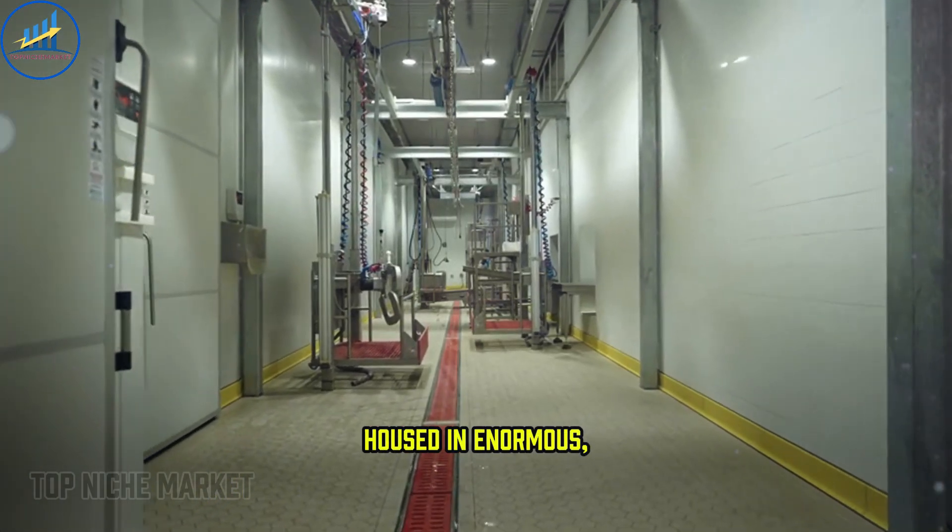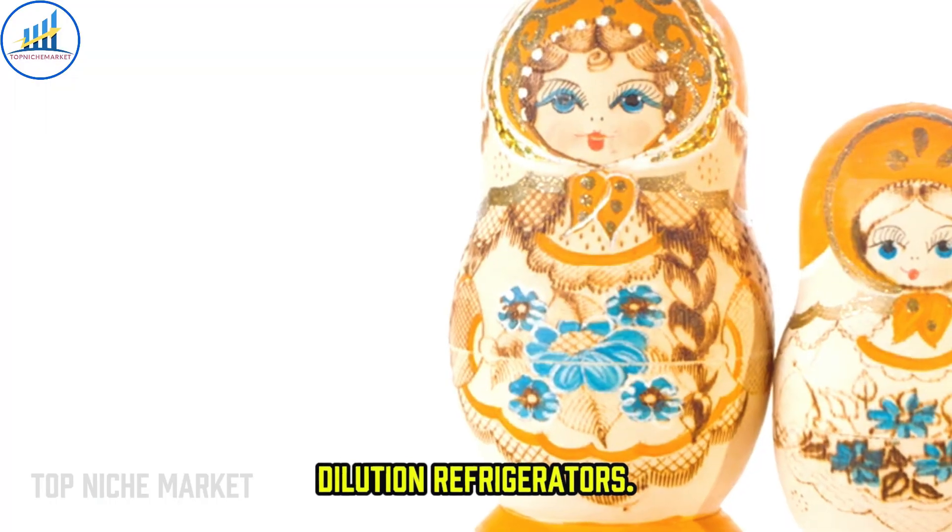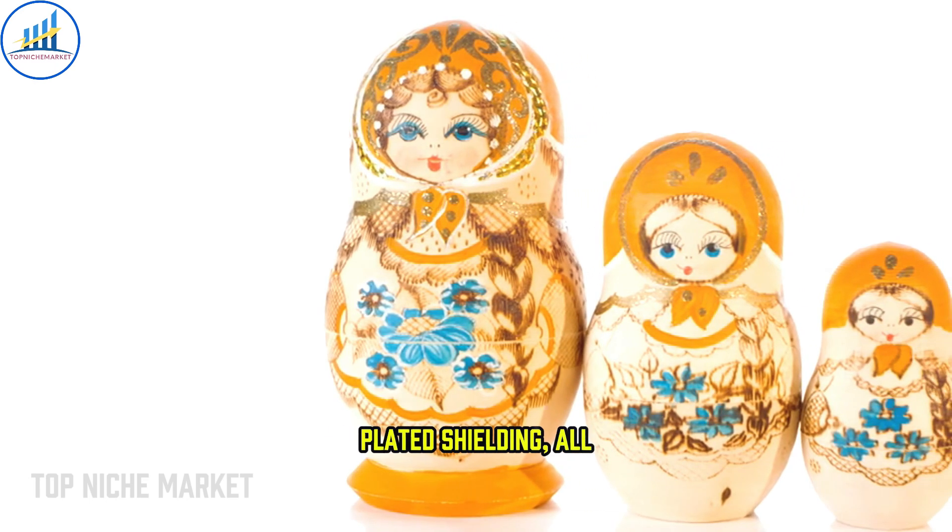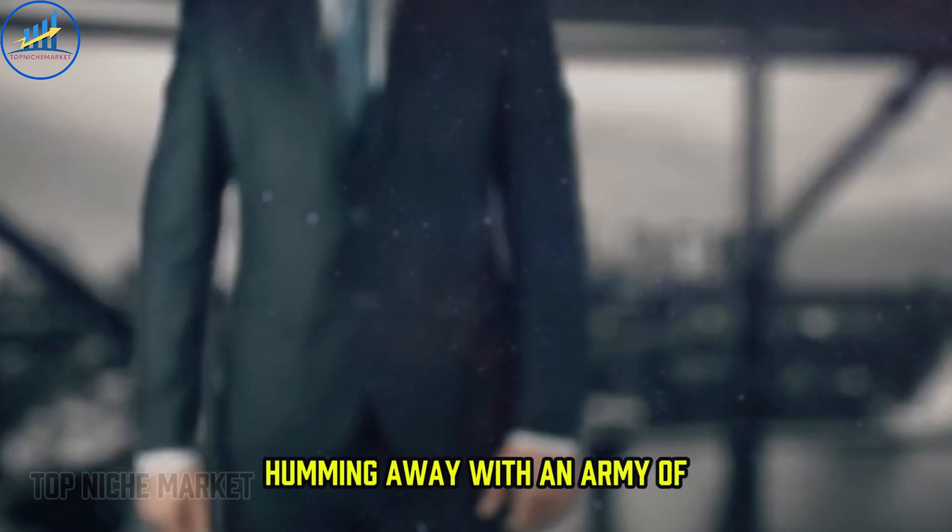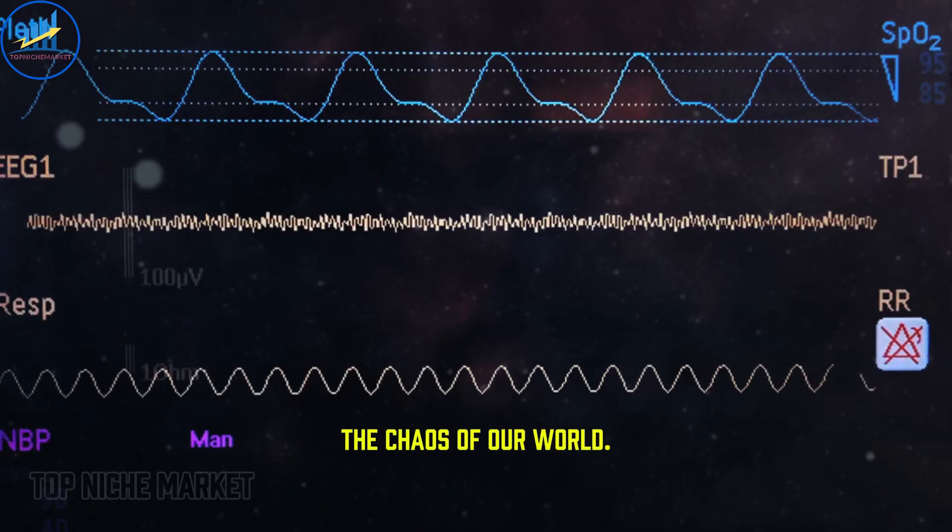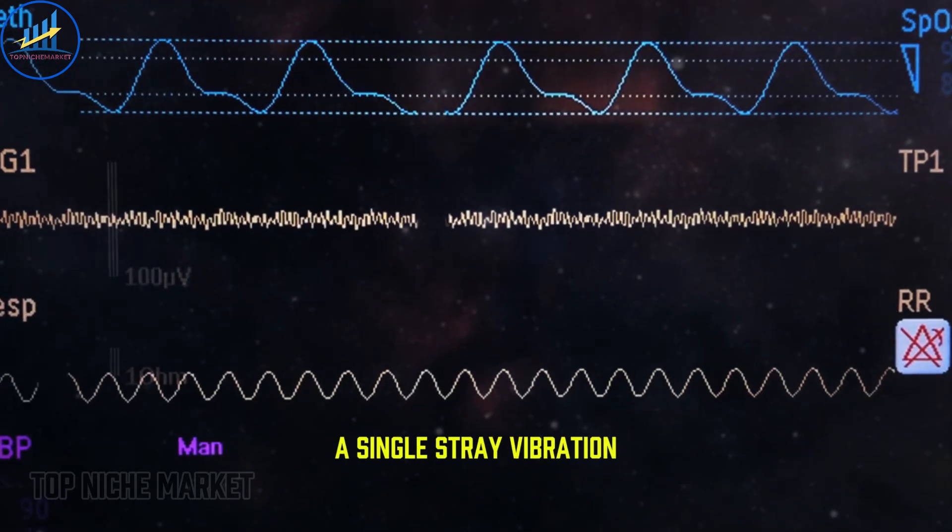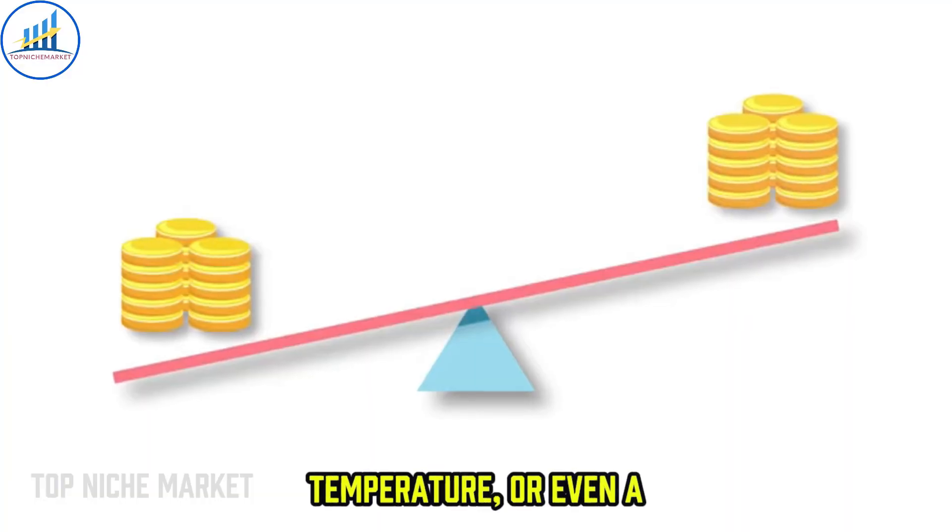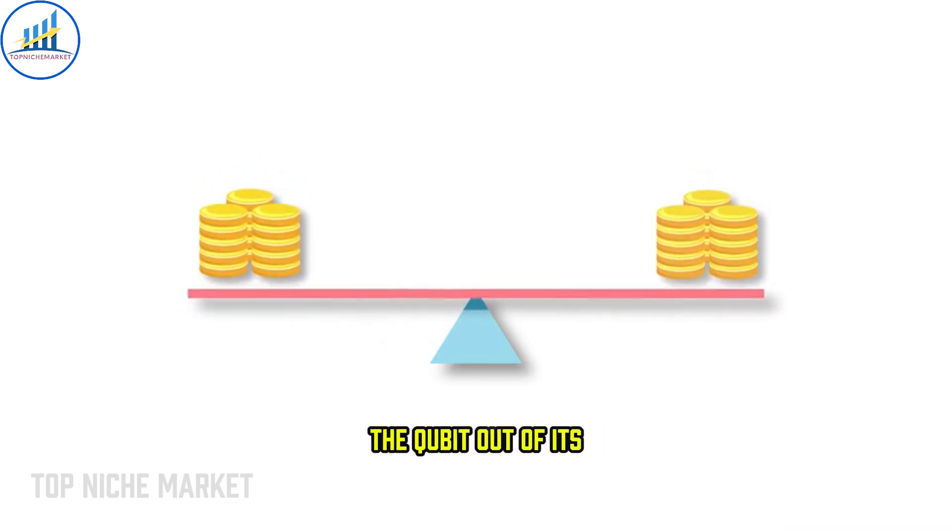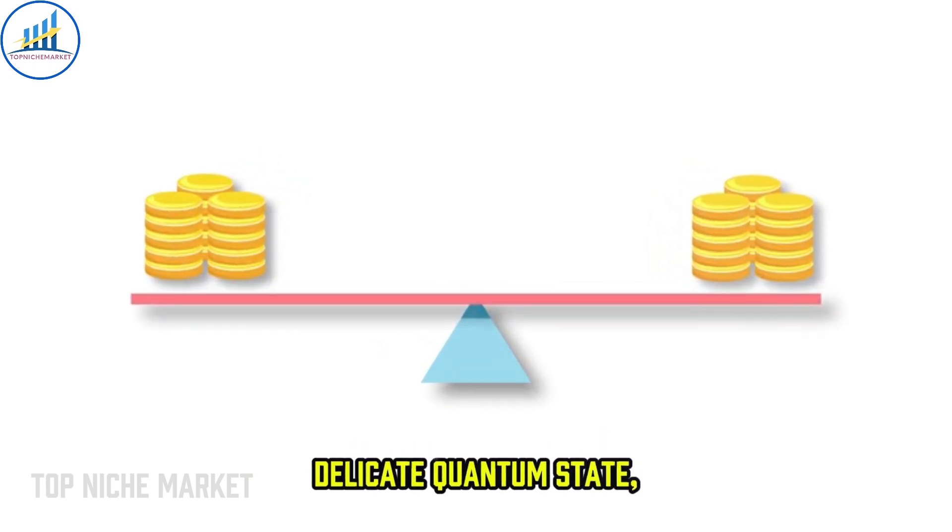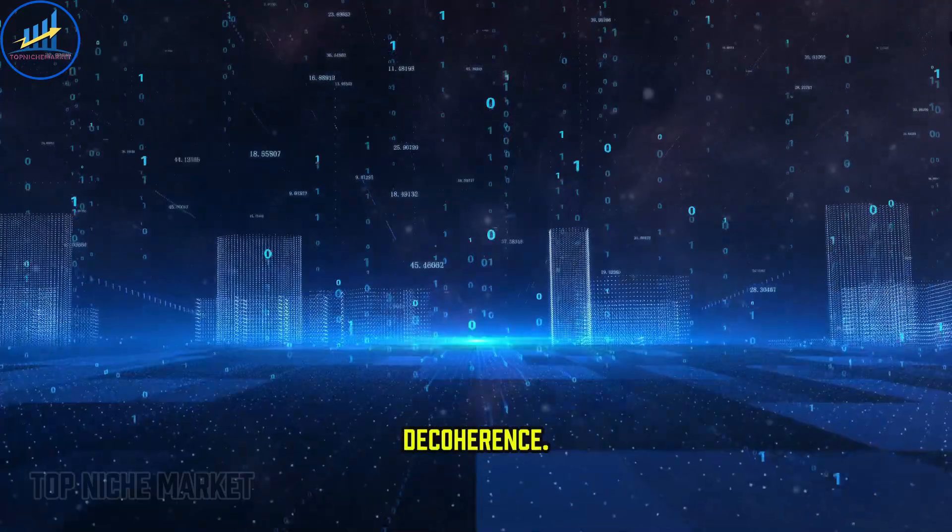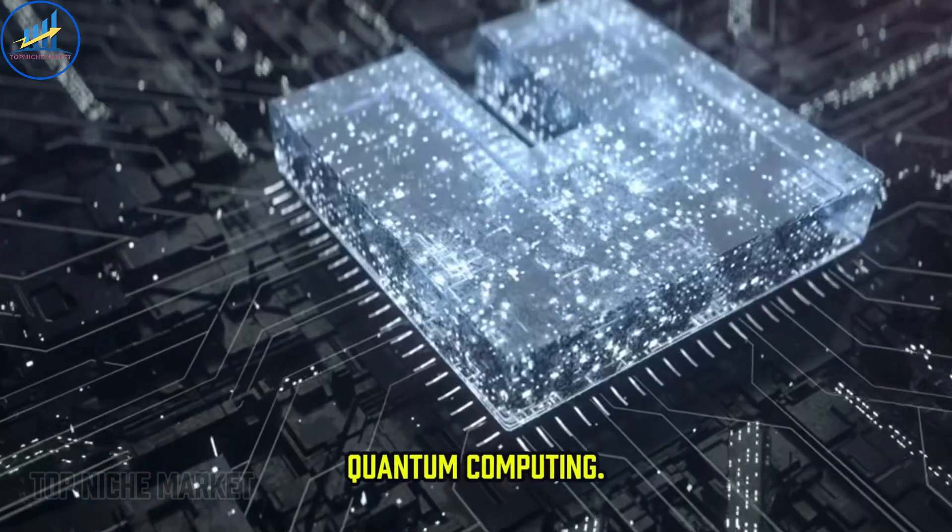These systems are housed in enormous, multi-million dollar dilution refrigerators. Picture a set of Russian nesting dolls the size of a car with layers of gold-plated shielding, all humming away with an army of pumps and cryogenic fluids. Their purpose? To isolate the qubits from the chaos of our world. A single stray vibration from a passing truck, a tiny fluctuation in temperature, or even a lone cosmic ray from a distant exploding star can be enough to knock the qubit out of its delicate quantum state, creating an error and ruining the entire computation. This is known as decoherence. It's the arch nemesis of quantum computing.